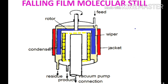Now let's move on to the procedure or working of falling film molecular distillation assembly. First of all, the vessel is heated by means of a suitable heating mechanism using the jacket. Vacuum is applied at the center of the vessel. Then the wipers are allowed to rotate with the help of a rotor. Feed is introduced through the feed inlet into the vessel. As the liquid flows down the walls, it spreads to form a film on the evaporating surface with the help of the wipers.